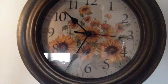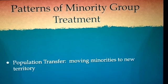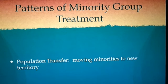Another type of interaction is population transfer. In this case, minorities are removed from desired land and relocated to undesired land. An example would be the pushing of Native Americans off of desired land throughout America, relocating them to reservations — some of the least valuable and most agriculturally worthless land in the U.S.